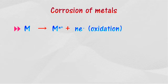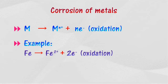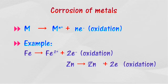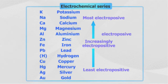Metal atoms lose electrons to form ions in oxide form. The properties of the ions formed vary from the original metal atoms, and the metal is corroded. For example, if iron loses electrons to form iron ions, the iron is said to have corroded. If zinc loses electrons to form zinc ions, zinc is corroded.